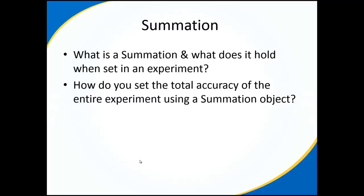I look at it as like a bin — it holds and gathers statistical data for you throughout your experiment, and then at the end it'll give you a nice number of whatever you need. For this example, we're doing total accuracy, so the summation will gather that for you in the background of E-prime using the script, and then it will generate a value for you at the end.